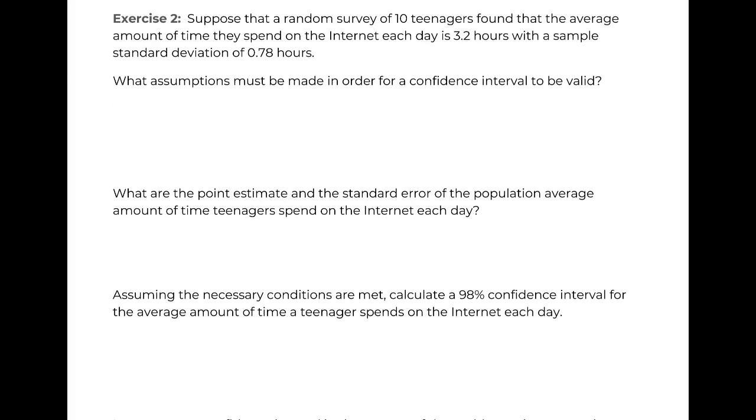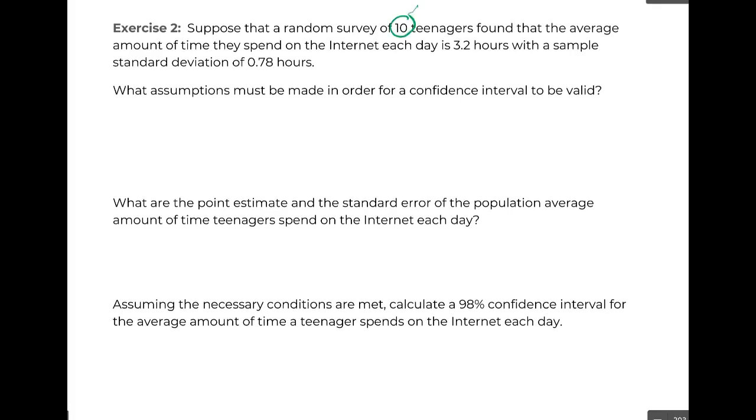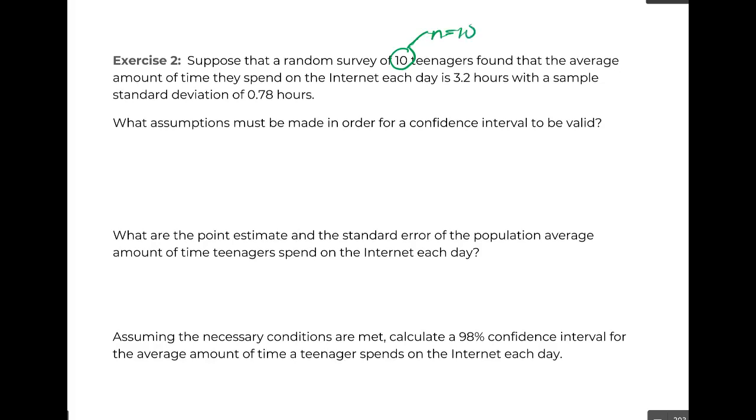So let's do an exercise where we actually create a confidence interval. Suppose a random sample of 10 teenagers, here we go, we got our N. Found that the average amount of time they spend on the internet each day is 3.2 hours. So this is an average, and it's an average from our random survey. So this 3.2, that's an X-bar. It's not a real true mean. It's a sample mean. And with a sample standard deviation of 0.78. So they've given us an S.